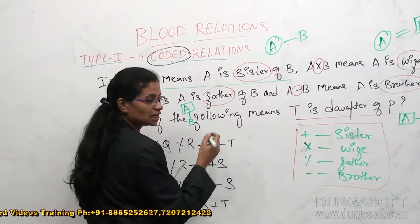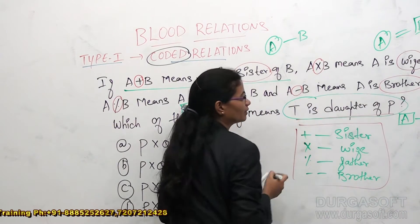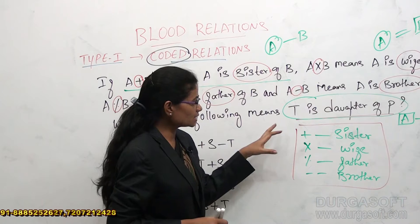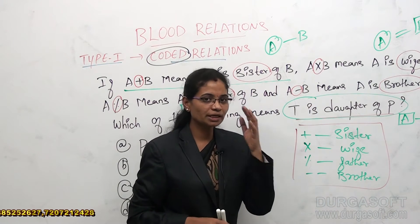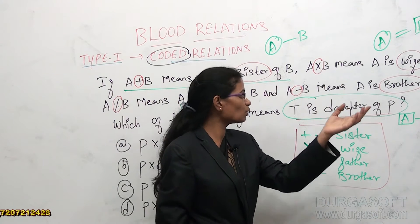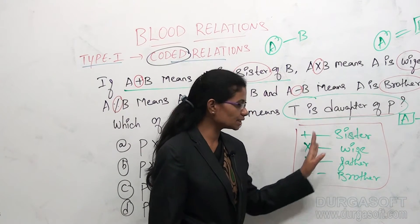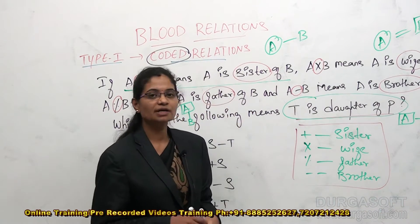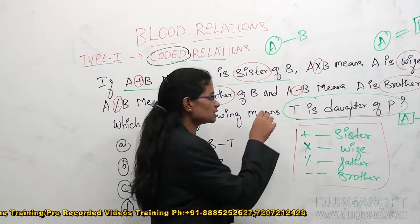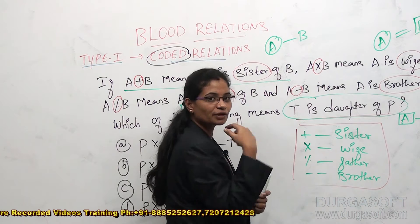The question says 'which of the following means that T is a daughter of P.' We have to find the equation which gives T is a daughter to P. In an online examination you may not always be able to go back to the question and check the options, so wherever you are writing this kind of symbols work, just write what the main question is. Here the main question is: T is a daughter of P, so T should be a female person.